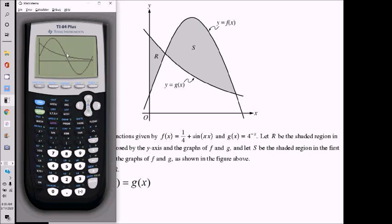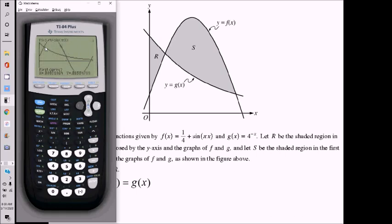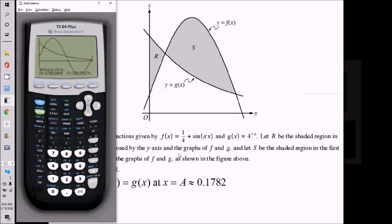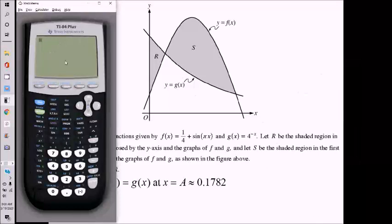I want to find this intersection for part A. And while I'm at it, I'll find the other intersection too, since I've got a feeling I'm going to need it later. So let me do second, trace, option 5 for intersect. Moving the cursor from left to right — enter one, two, three times — that happens at about 0.1782. I'm going to give that one a name and call it A. On the calculator, I'll press the store button and store that as alpha A, so I don't need to rewrite it every time I want to use it.